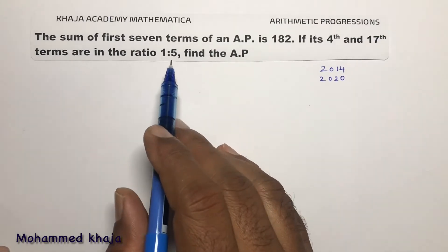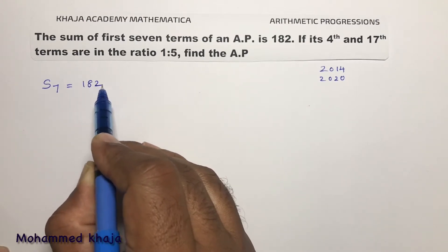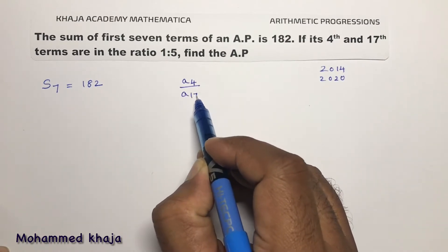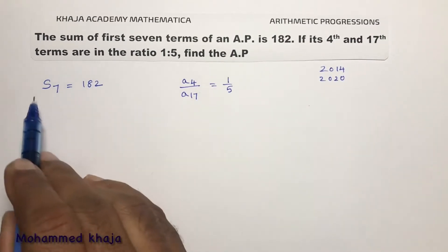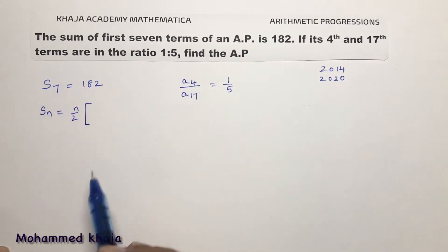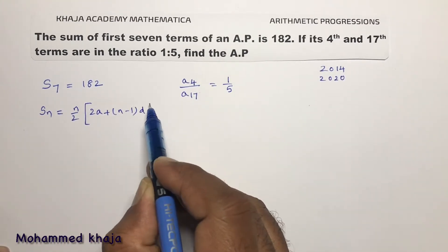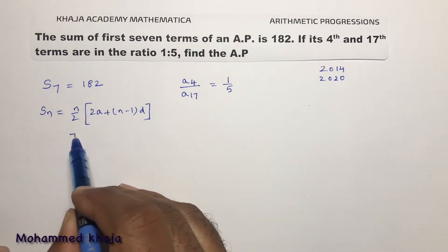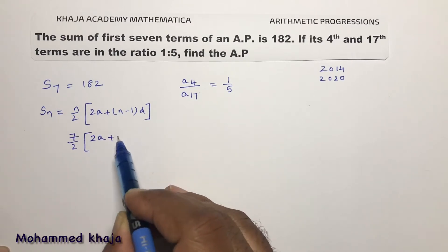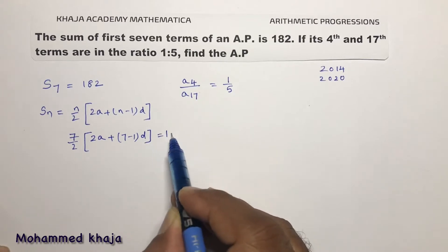Now see the sum of first seven terms of an AP is 182 and its fourth term and 17th term are in the ratio 1 is to 5. So SN, sum of N terms formula is N by 2 into 2A plus N minus 1 into D. So S7 equals 7 by 2 into 2A plus 7 minus 1 into D equals 182.